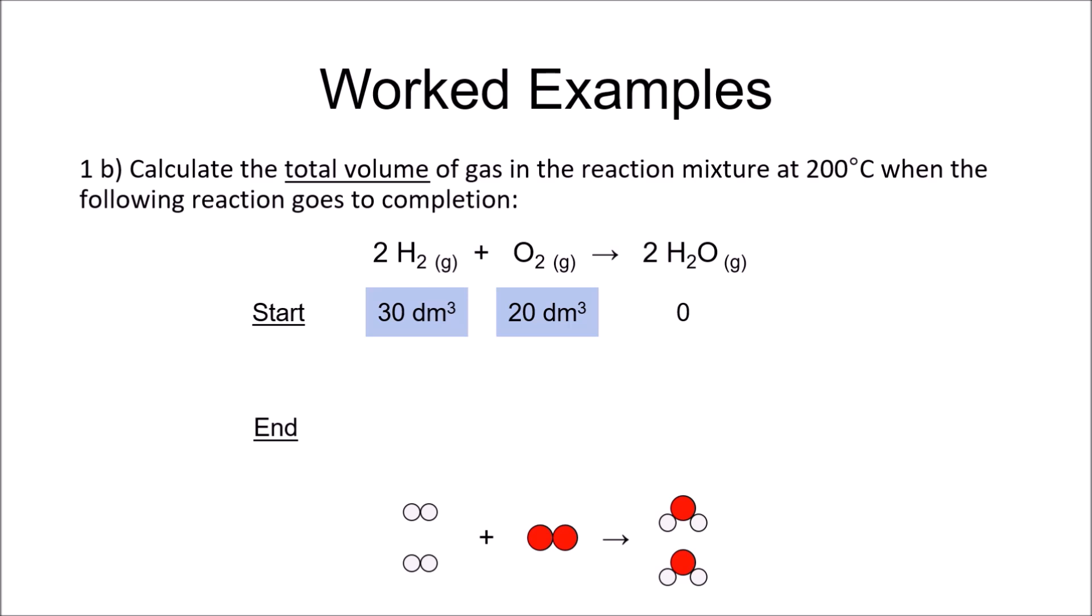Now in this case, they want us to calculate the total volume of gas in the reaction mixture when the reaction goes to completion. As you can see, oxygen is in excess this time, so five cubic decimetres will be left unreacted. Add these to the volume of steam produced, and you have your answer.